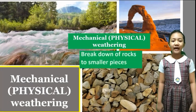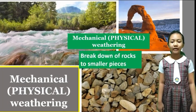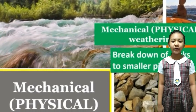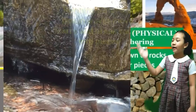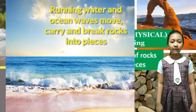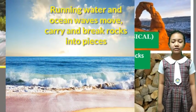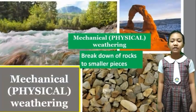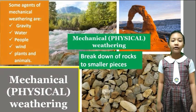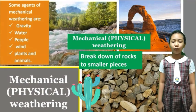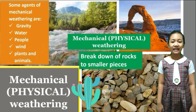Second, mechanical or physical weathering is the breakdown of rock into smaller pieces. For example, running water and ocean waves move, carry, and break rocks into pieces. Some agents of mechanical weathering are gravity, water, people, wind, plants, and animals.